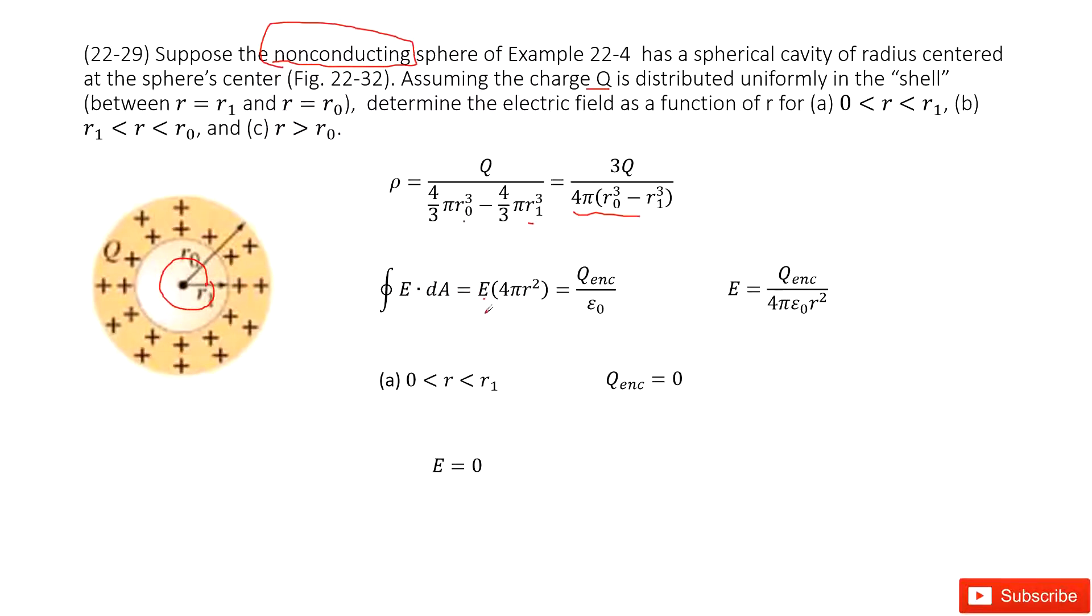Electric field times the Gaussian surface equals enclosed charge divided by epsilon naught. Now, inside this Gaussian surface, is there any enclosed charge? No, because the charge is just located on this shell. So E equals zero.